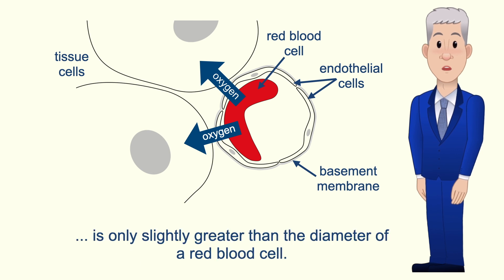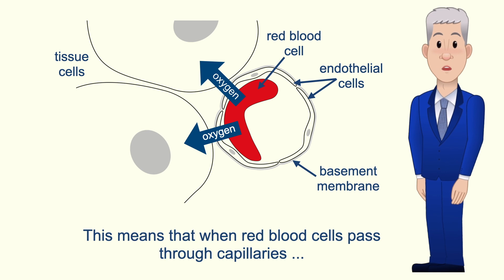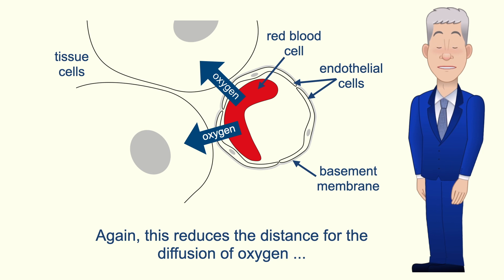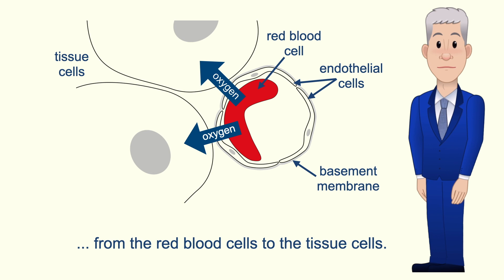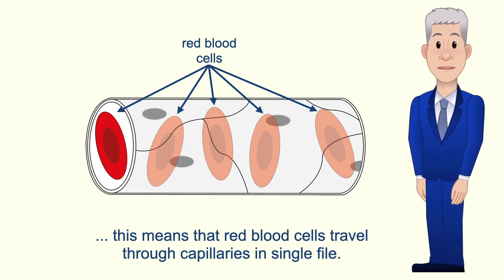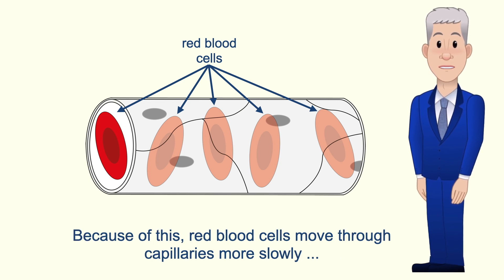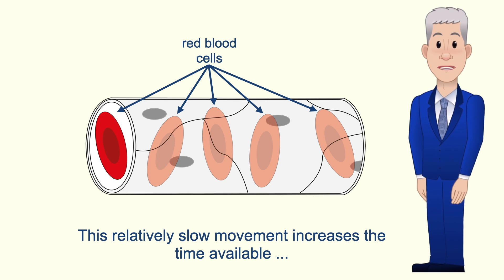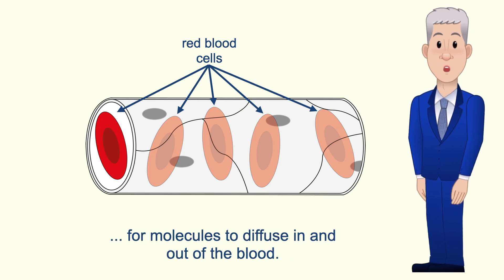The diameter of the capillary lumen is only slightly greater than the diameter of a red blood cell. This means that when red blood cells pass through capillaries they are pressed against the capillary wall, which reduces the distance for the diffusion of oxygen from the red blood cells to the tissue cells. Because the lumen is only slightly wider than a red blood cell, red blood cells travel through capillaries in single file, moving more slowly than in arteries and arterioles. This relatively slow movement increases the time available for molecules to diffuse in and out of the blood.